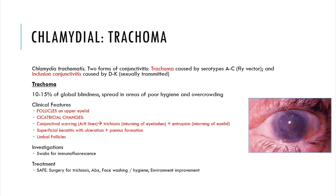Moving on to chlamydial conjunctivitis, which comes in two main forms. The first is called trachoma, which is more prevalent in third world countries. The second type is inclusion conjunctivitis, which is more prevalent in first world countries. Trachoma is caused by serotypes A to C of Chlamydia trachomatis and is transmitted via fly vector. It's quite a unique type of conjunctivitis, characterized by follicles — usually associated with viral causes — and also cicatricial changes.